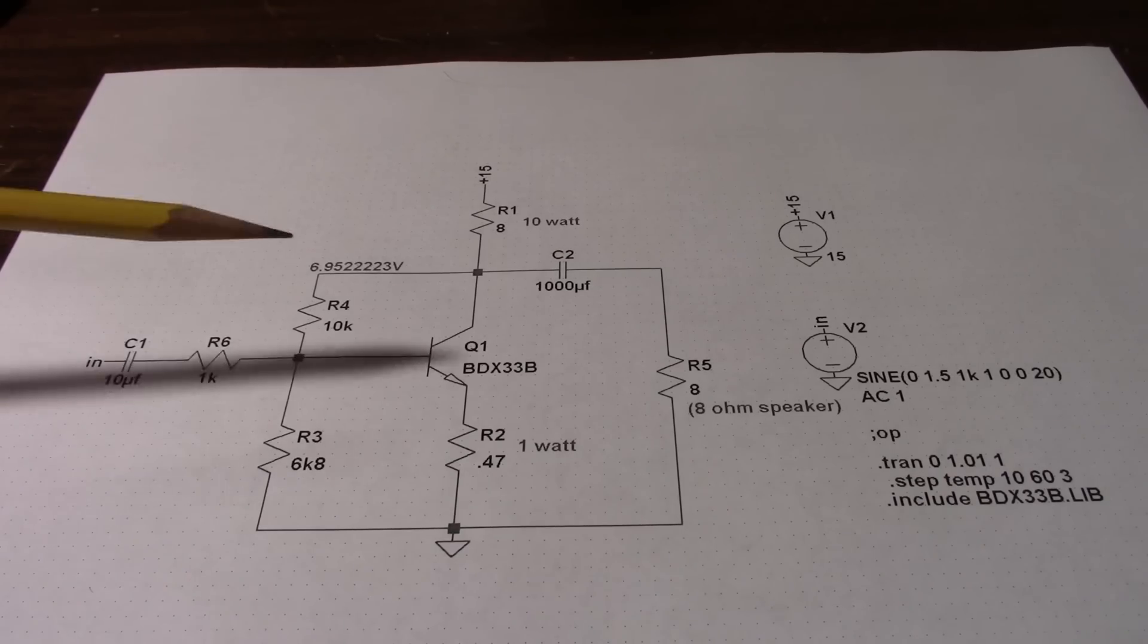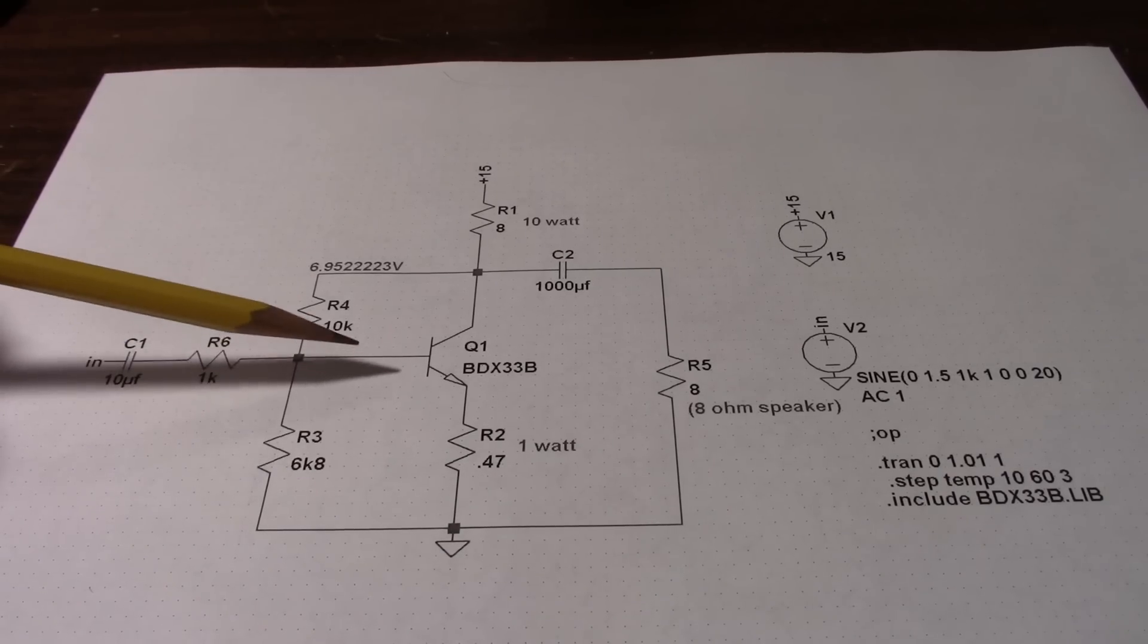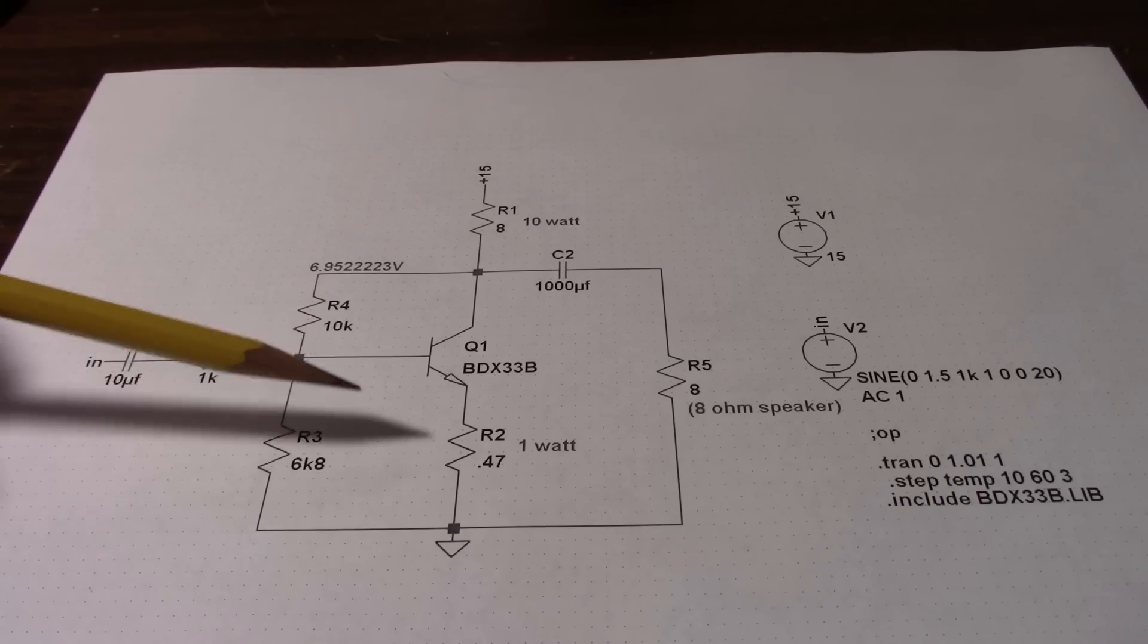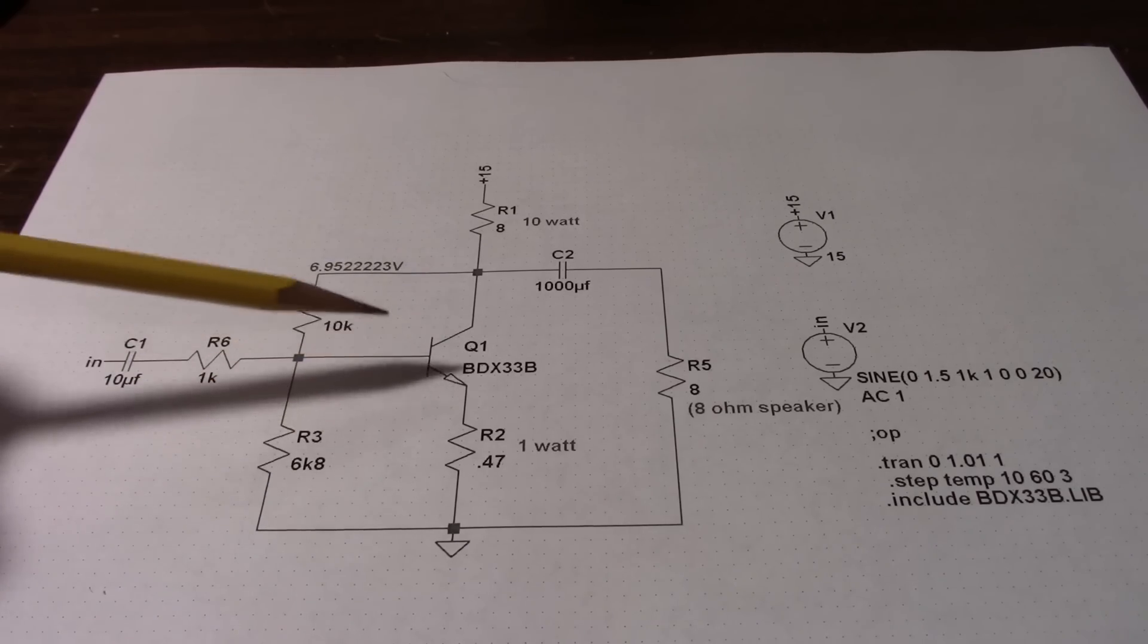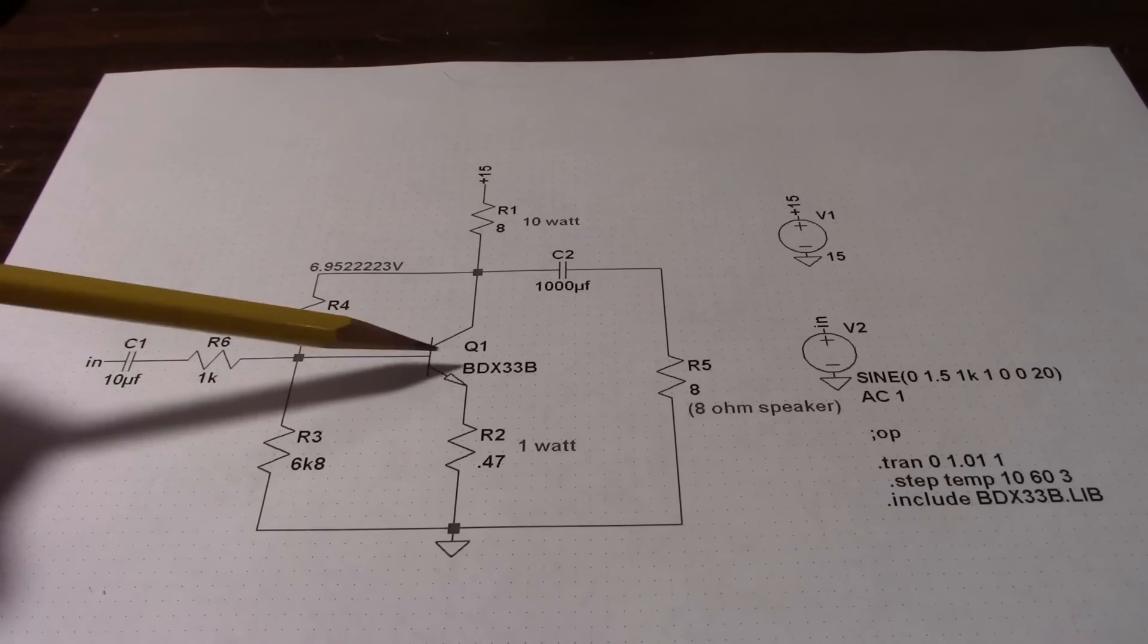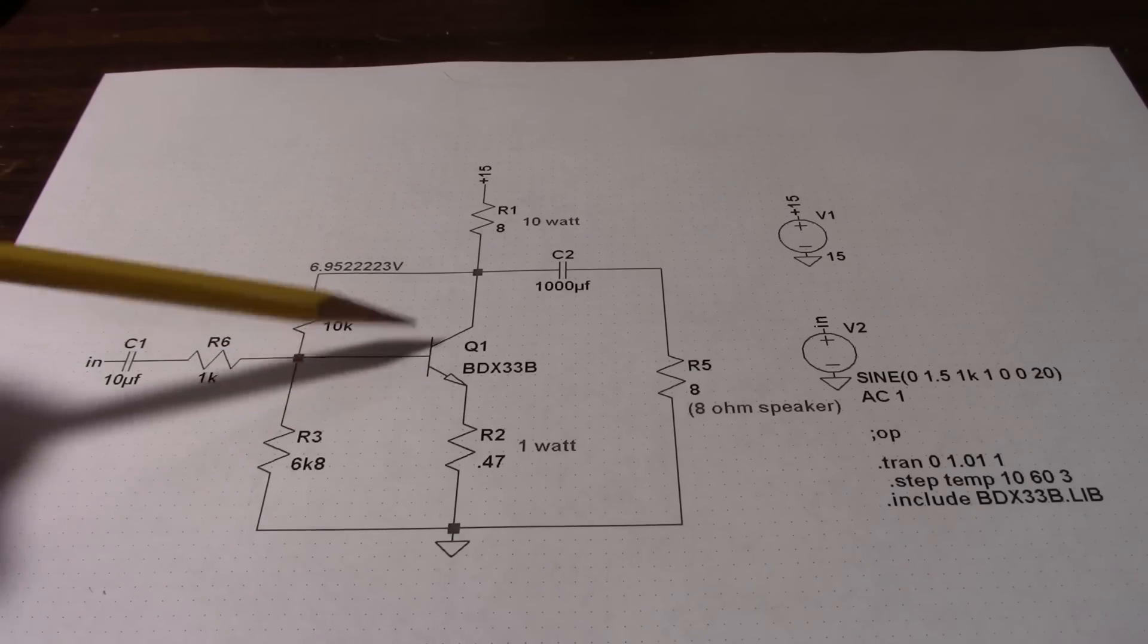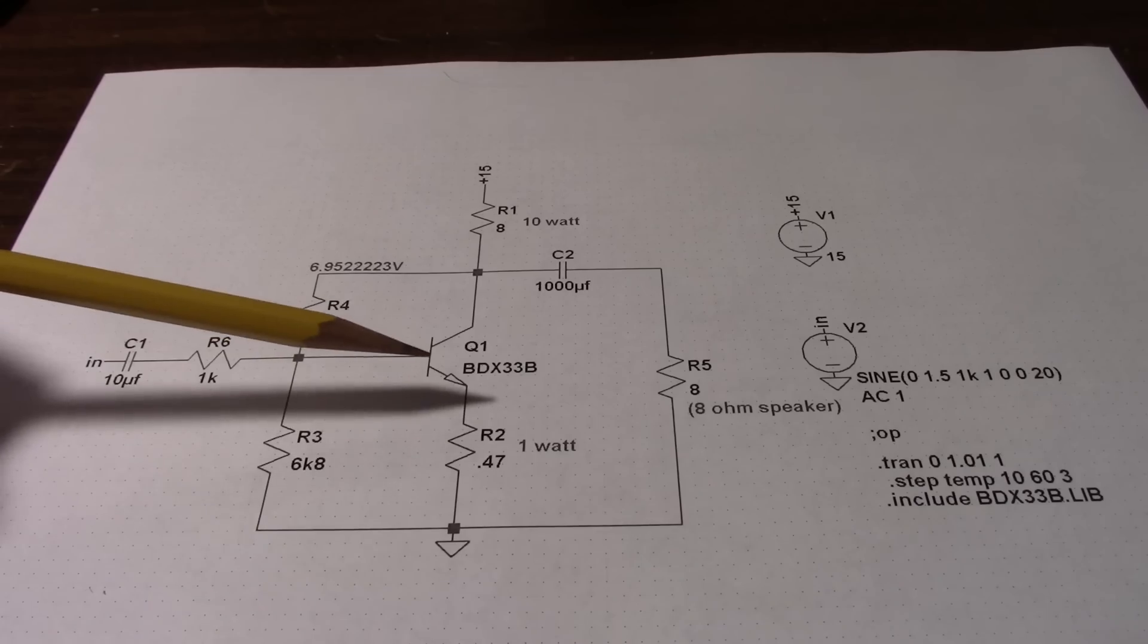Okay, here is the circuit I've come up with. It's a single active element class A amplifier. I say single active element because there's only one transistor. Now technically there's two transistors because this is a Darlington configuration, but it's all in one package to make it neat and tidy.